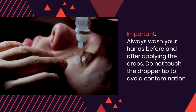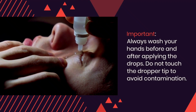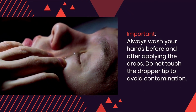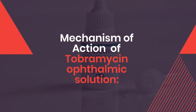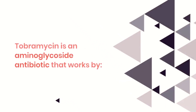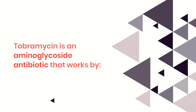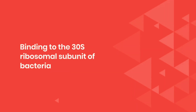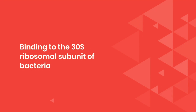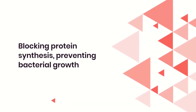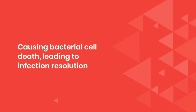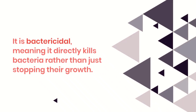A few precautions to keep in mind: always wash your hands before and after using the drops, and do not touch the dropper tip to avoid contamination. Tobramycin belongs to the aminoglycoside class of antibiotics and works by targeting bacterial protein synthesis. It binds to the 30S ribosomal subunit of bacteria, blocking protein synthesis, which prevents bacterial growth and ultimately leads to bacterial cell death. Since tobramycin is bactericidal, it kills bacteria directly rather than just stopping their growth.